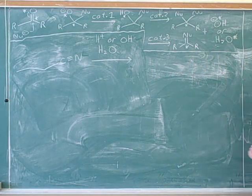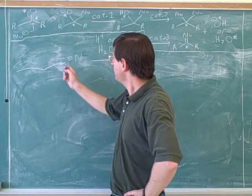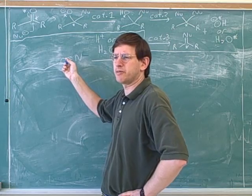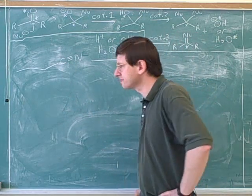All right, well, we'll go over another way that you can make carboxylic acids. What would be a name for this type of functional group? Cyanide or nitrile. Anybody can call it a cyanide or a nitrile, a carbon-nitrogen triple bond.